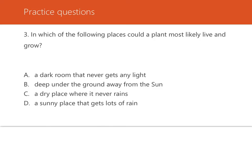Question three: in which of the following places could a plant most likely live and grow? Plants need air — the carbon dioxide — they need water, and they need sunlight. They're going to produce the sugar and the oxygen gas. So a plant would most likely live and grow in a sunny place that gets lots of rain. Plants cannot grow well in places with no sunlight and no water. The answer is D.